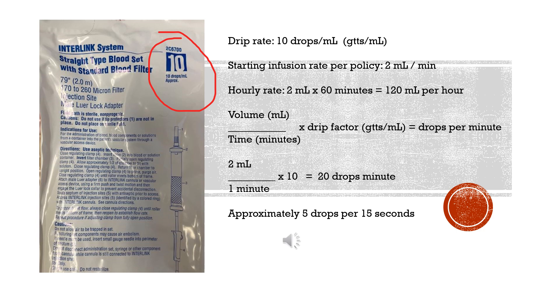So in order to calculate our hourly rate, we're going to take the 2 mls times 60 minutes in an hour equals 120 mls per hour. This is the hourly rate that you will document when you're beginning your blood transfusion.